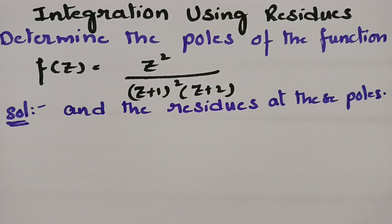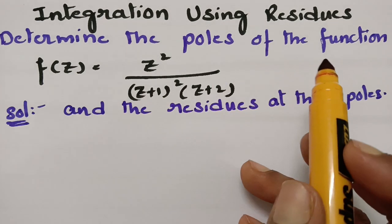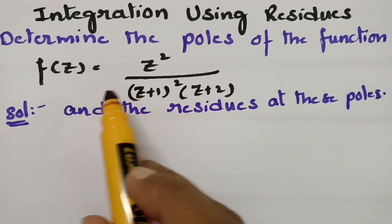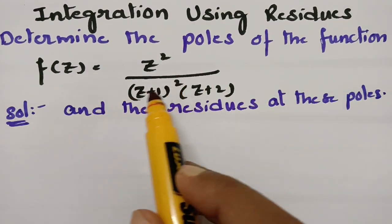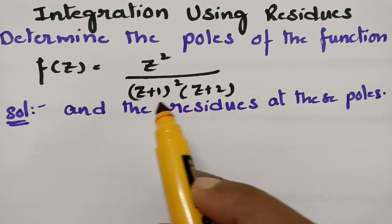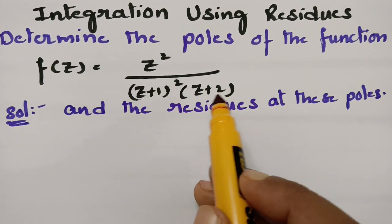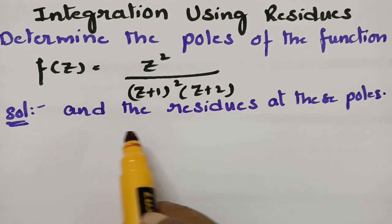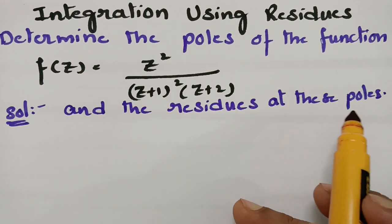Today's video is on integration using residues. In today's video we have to determine the poles of the function f(z) = z² / [(z+1)²(z+2)] and the residues at these poles.